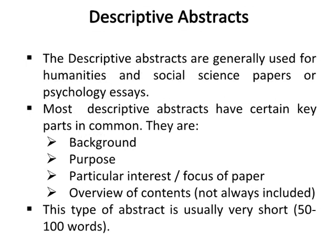Descriptive abstracts are generally used for humanities and social science papers or psychology essays. Most descriptive abstracts have certain key parts in common: background, purpose, particular interest, focus of paper, and overview of contents — though the overview of contents is not always included. This type of abstract is usually very short, between 50 to 100 words.